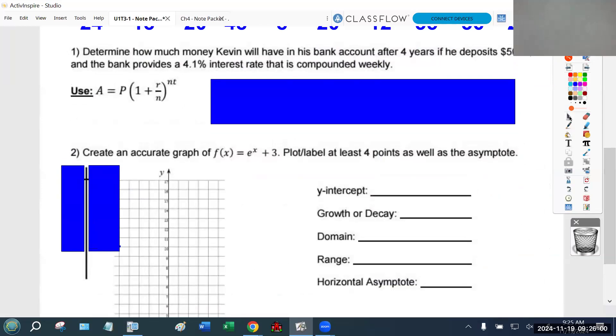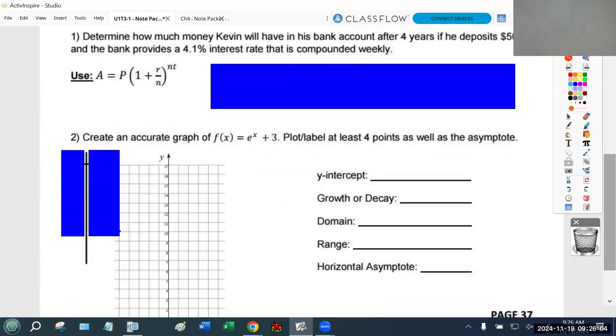This is to help us prepare for today's CFU. The first type of problem you're going to encounter is compound interest. It says determine how much money Kevin will have in his bank account after four years - that's your time - if he deposits $5,000, that's your initial amount. The bank provides a 4.1% interest rate, that's your r. Remember to convert any percentage to a decimal by dividing by 100, so this would be 0.041. Finally, it's compounded weekly. How many weeks are in a year, folks? 52.